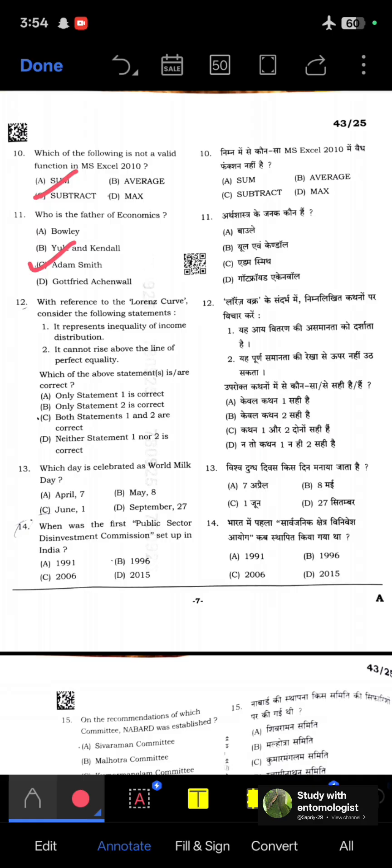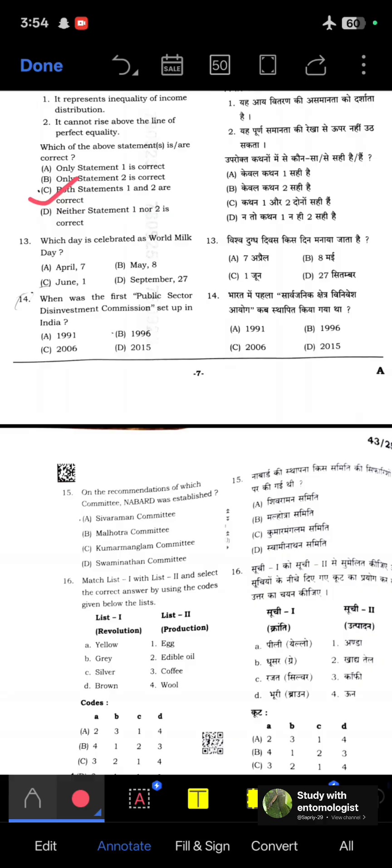Who is the father of economics? Known as Adam Smith. With reference to the Lorenz curve, consider the following statements. First, it represents inequality of income distribution. Second, it cannot rise above the line of perfect equality. Both statements are correct. Which day is celebrated as World Milk Day? June 1.